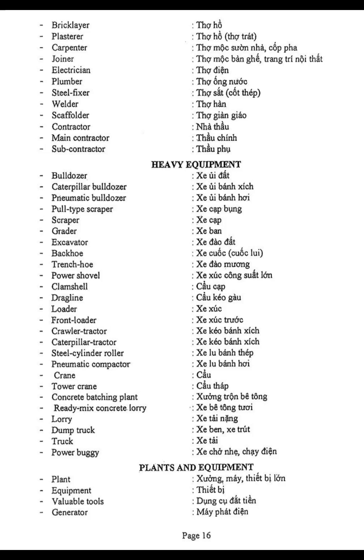Heavy Equipment: Bulldozer, Caterpillar Bulldozer, Pneumatic Bulldozer, Pull Type Scraper, Scraper, Grader, Excavator, Backhoe, Trenchhoe, Power Shovel, Clamshell, Dragline, Loader, Front Loader, Crawler Tractor, Caterpillar Tractor, Steel Cylinder Roller, Pneumatic Compactor, Crane, Tower Crane, Concrete Batching Plant.